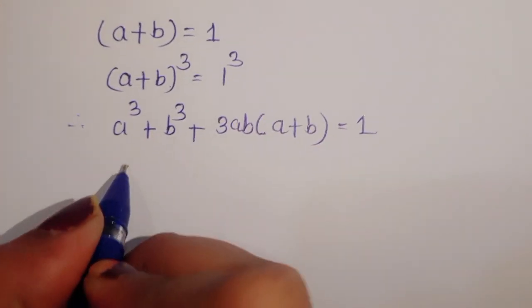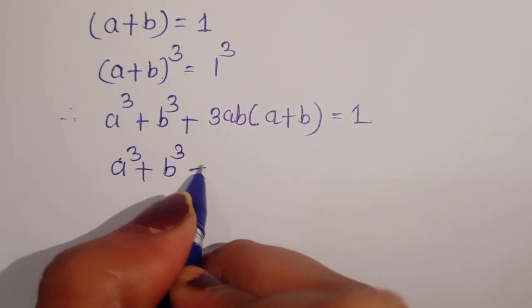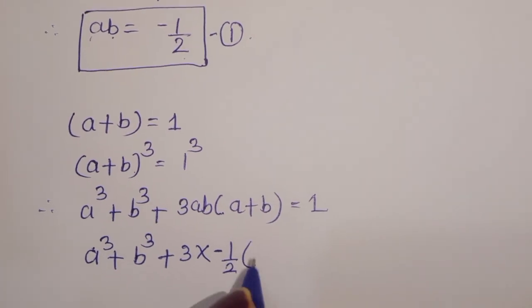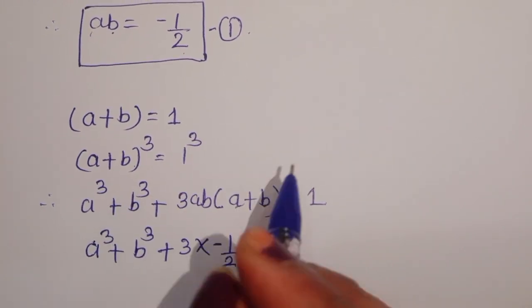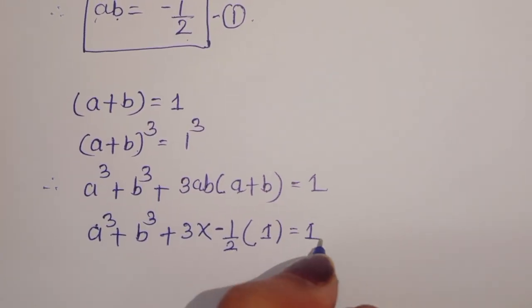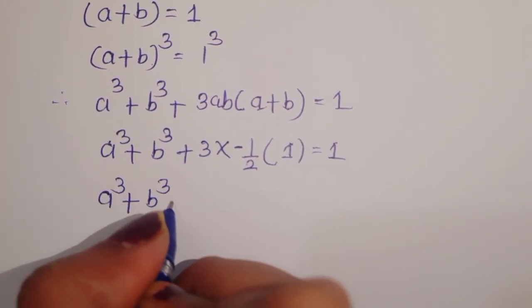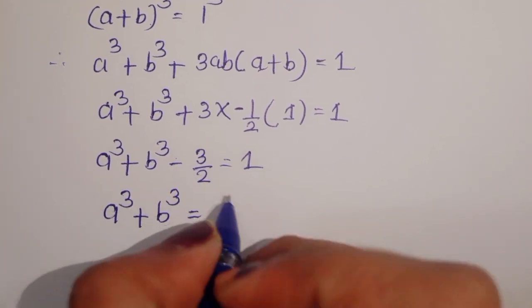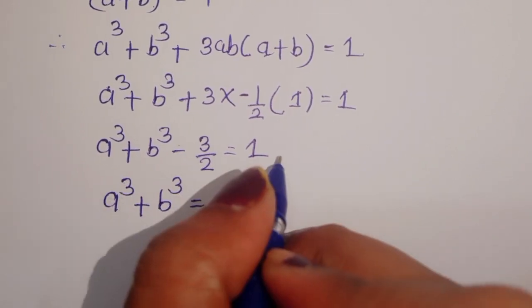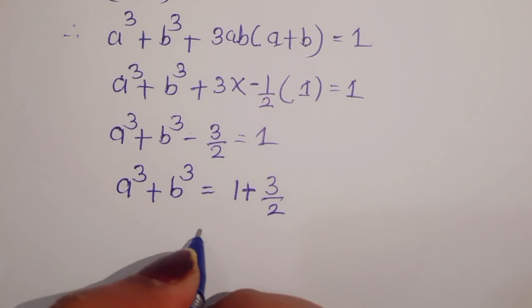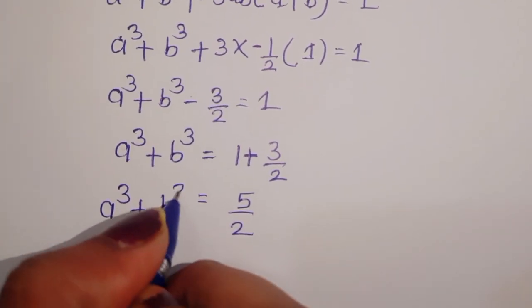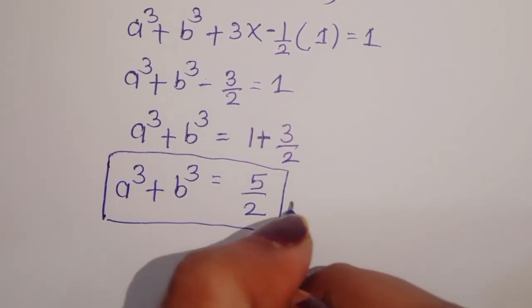So we can write a cube plus b cube plus 3 into the value of ab which is minus 1 upon 2, into the value of a plus b which is 1, is equal to 1. So we can write a cube plus b cube minus 3 upon 2 is equal to 1, therefore a cube plus b cube is equal to 1 plus 3 upon 2, which is equal to 5 upon 2. So a cube plus b cube is equal to 5 upon 2 — this is equation 2.